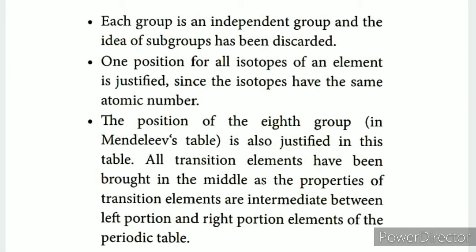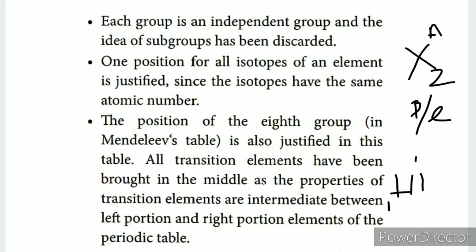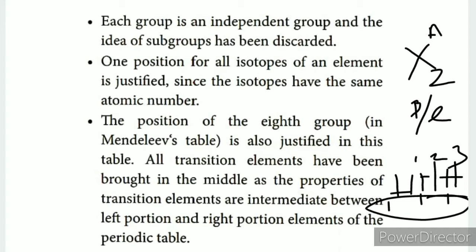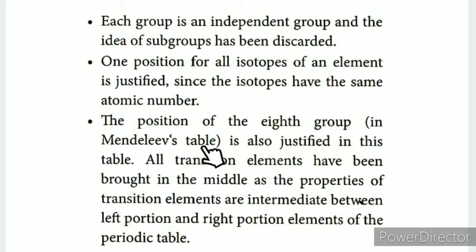In Mendeleev's periodic table, using mass number was a drawback. Now, A is called the mass number and Z is called the atomic number. The proton number equals the electron number. The isotopes of hydrogen are H-1, H-2, and H-3. These are the main isotopes. The reason for the eighth group in Mendeleev's table is also justified in the modern periodic table.